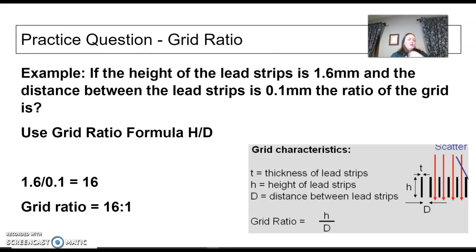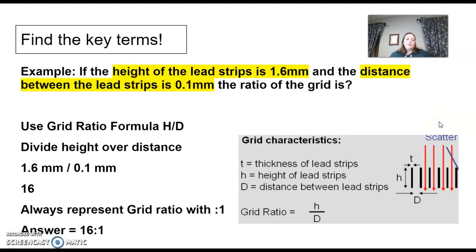I have a practice grid question here. If the height of the lead strips is 1.6 millimeters and the distance between the lead strips is 0.1 millimeters, the ratio of the grid is what? You're simply just going to put this into your grid ratio formula, which is h over d. The height of the lead strips is 1.6 divided by the distance between 0.1 equals 16. Grid ratio is written like this, so it's a 16 to 1. This is a super easy grid ratio, super easy math. The trick is to find the key terms: height of the lead strip, distance between them, ratio of the grid.